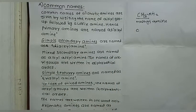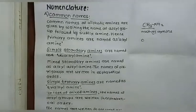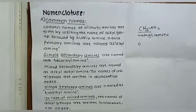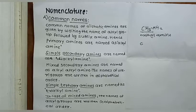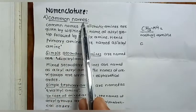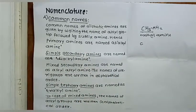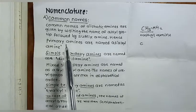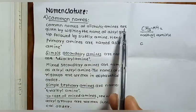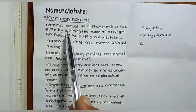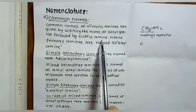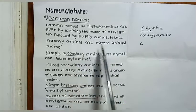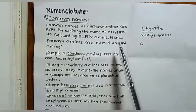Hello students, today we are going to study the nomenclature of amines. First we will see the common name method, and then IUPAC names. According to the common name method, the common names of aliphatic amines are given by writing the name of an alkyl group followed by the suffix 'amine'. Hence, primary amines are named as alkyl amines.